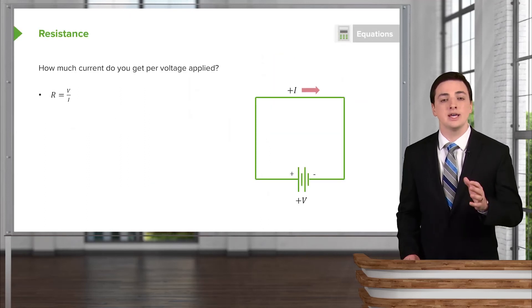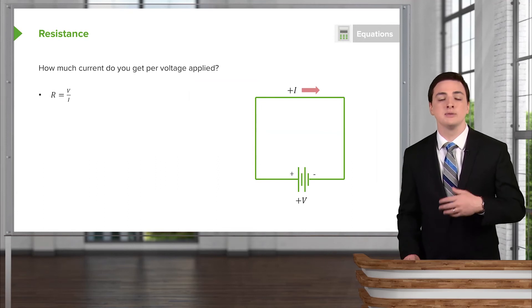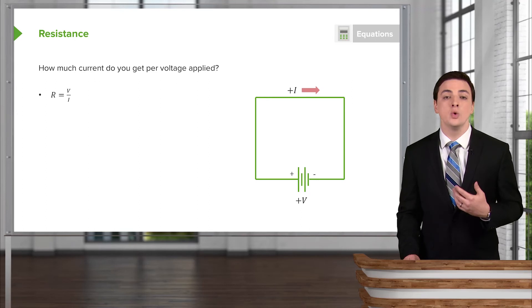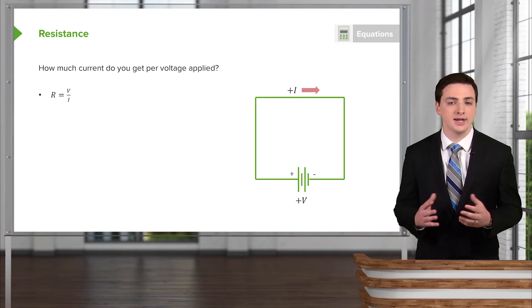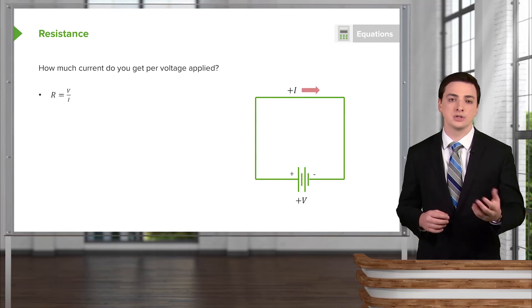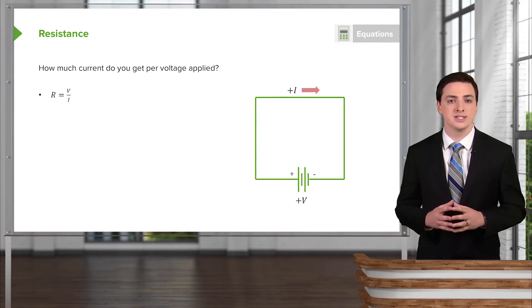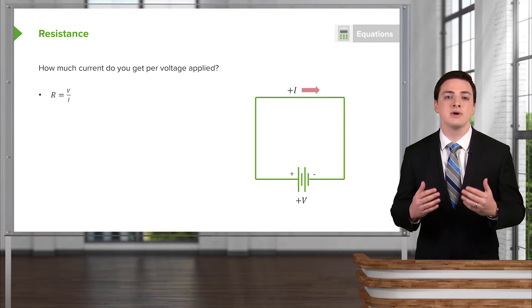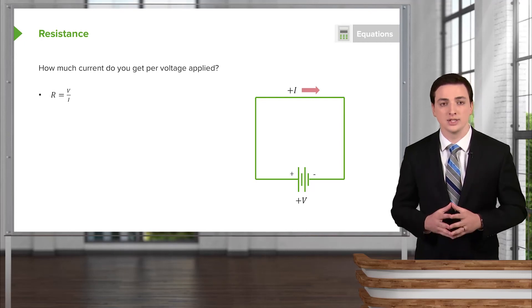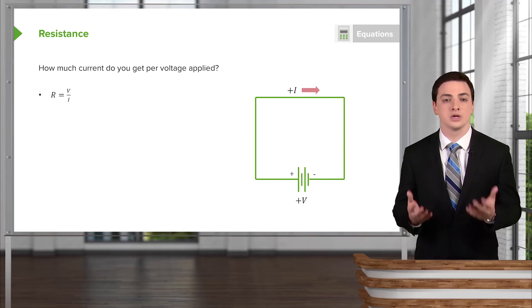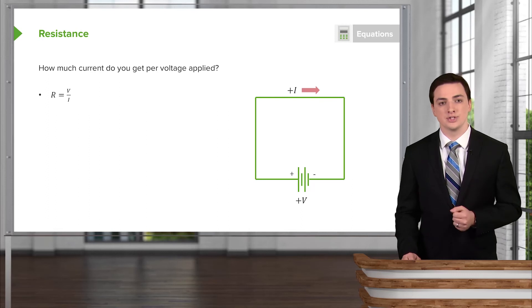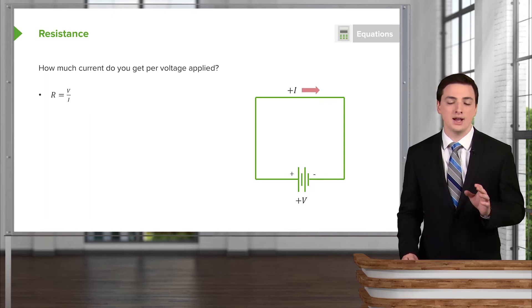Now when we have a particular voltage pushing a current through a particular circuit, we can ask ourselves the exact same kind of question that we asked with fluid flow. When we had fluid flow, we talked about the pressure, how much pressure we were applying to a system, and then asked for a given amount of pressure, how much current, how much flow rate as we called it there, was going to flow through our circuit. And we saw that that depended on the resistance of the circuit.